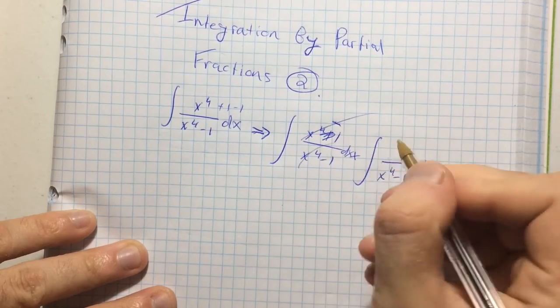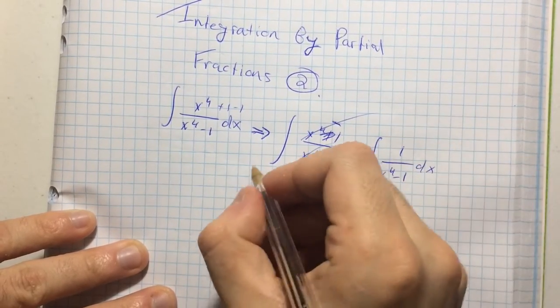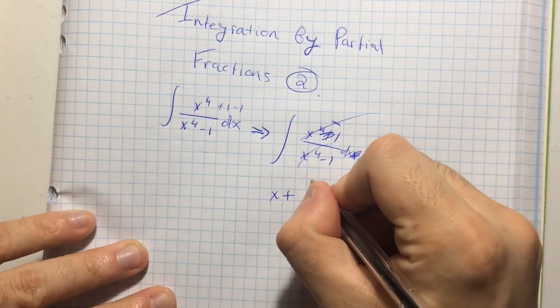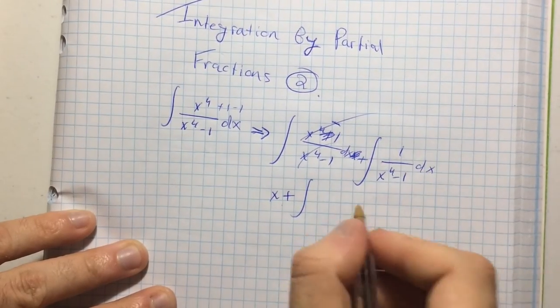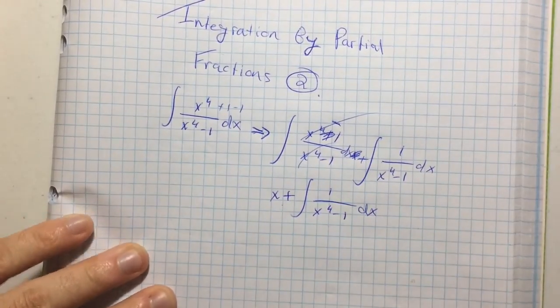So, cancel cancel. This is going to be x plus. Sorry about that, that's plus. So, x plus this integral right here. One over x to the fourth minus one dx. Cool.